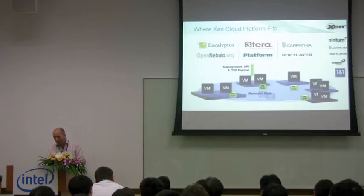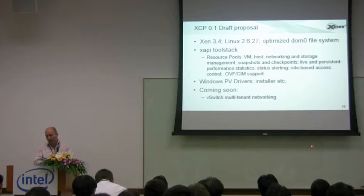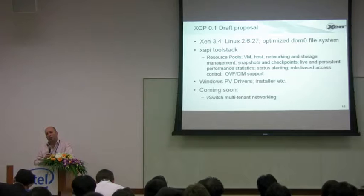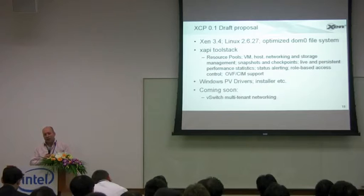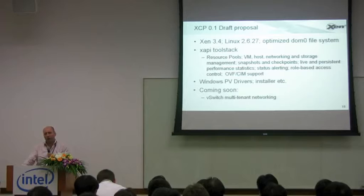This is where we are today with the 0.1 version, which you can download the CD of today. It's using Xen 3.4 and Linux 2.6.27 kernel based on the one used in Novell's SLES 11. It has an optimized Domain Zero file system, which is a generic Xen-branded file system that has been cut down to reduce the size, so there's still a lot more work that could be done there to make it even smaller.